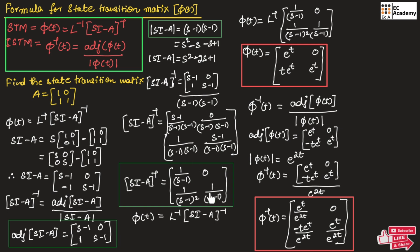For this matrix, we need to take the inverse Laplace transform to find the state transition matrix. The inverse Laplace of 1/(S-1) is e^t, the inverse Laplace of 0 is 0, the inverse Laplace of 1/(S-1)² is t·e^t, and the inverse Laplace of 1/(S-1) is e^t. So the state transition matrix for the given matrix A is [e^t, 0; t·e^t, e^t].